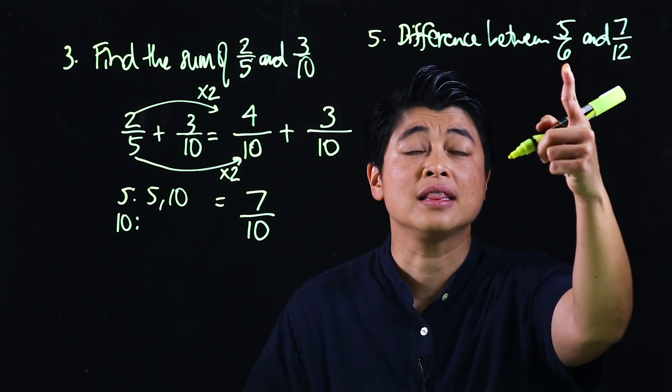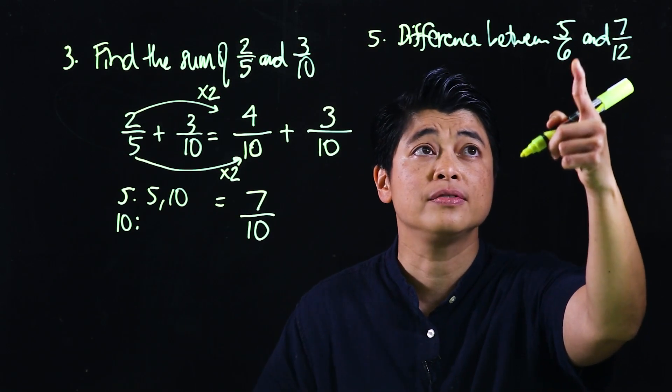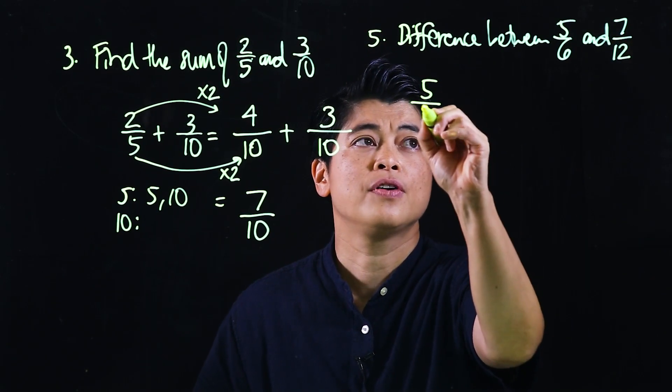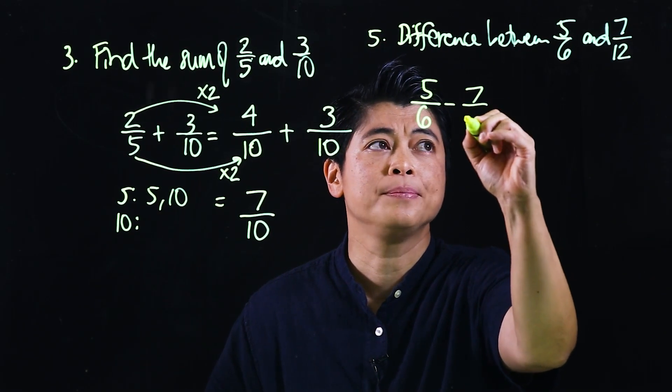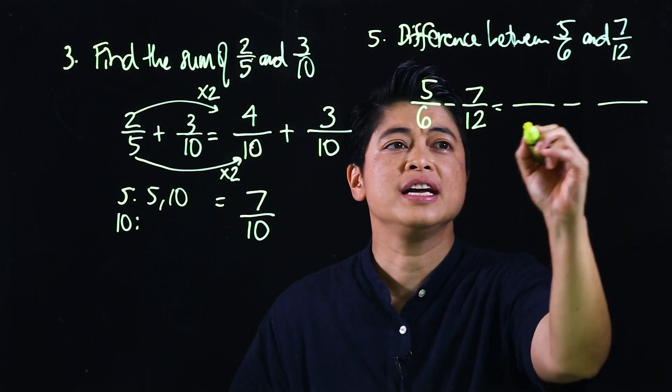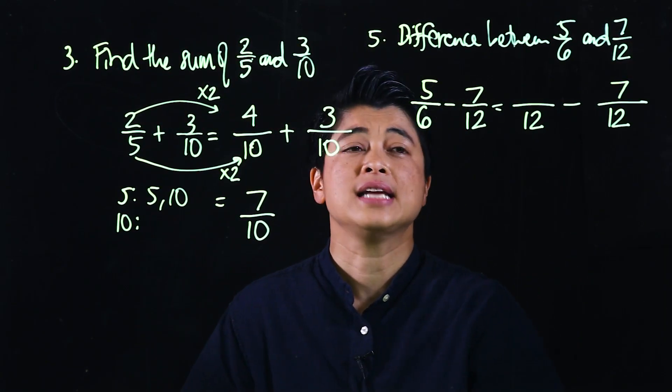The next step is to find the common denominator. Clearly if I count 6, 12, that would be times 2, so that's 10. The formula will therefore be five-sixths minus seven-twelfths.